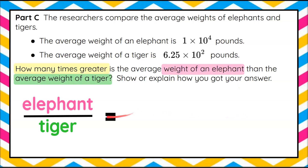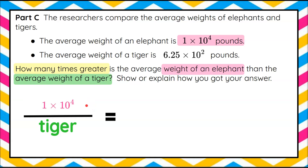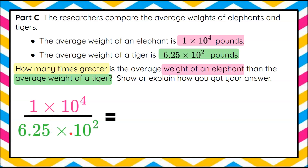Welcome back. So we want to find the weight of the elephant divided by the weight of the tiger to get how many times greater the elephant is than the tiger. We're told that the elephant is 1 times 10 to the fourth pounds, and the tiger is 6.25 times 10 squared pounds. We're going to replace those words with their values. When we divide, we're going to divide our factors first: 1 divided by 6.25 gives us 0.16.